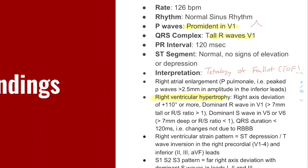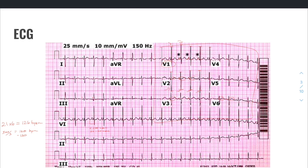One of them is right axis deviation greater than 110 degrees or more. Dominant R waves in V1. Dominant S waves in V5 or V6. And then you have a narrow QRS complex. Some of these may mimic a bundle branch block, but this is not a bundle branch block because our QRS complex was normal.